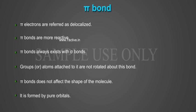Groups or atoms attached to it are not rotated about this bond. Pi bonds do not affect the shape of the molecule. It is formed by pure orbitals.